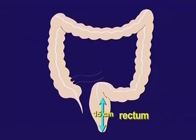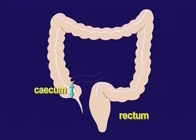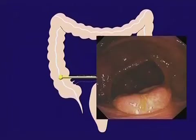The rectum is the first 15 centimetres, and the cecum — the dead end — is proximal to the ileocecal valve, which isn't always as obvious as this one.